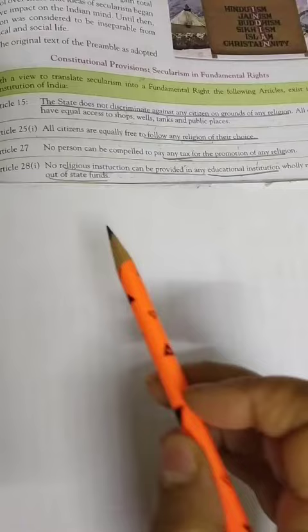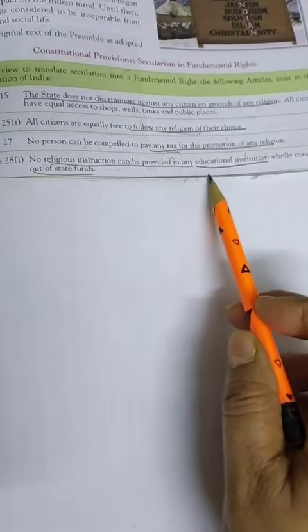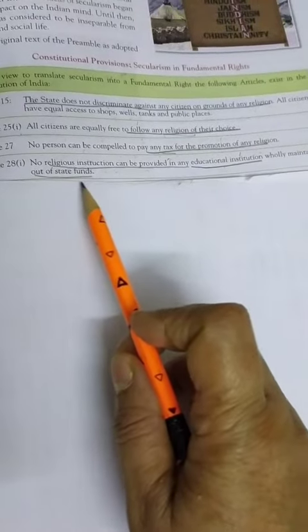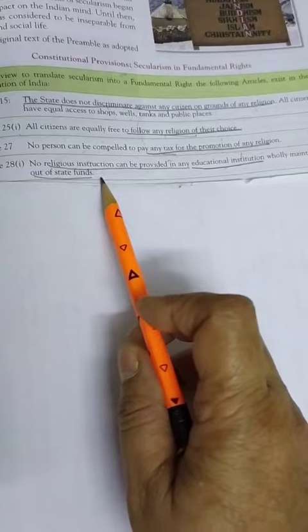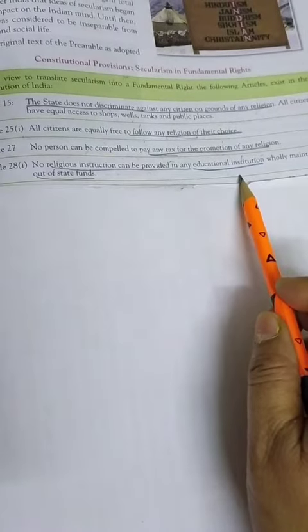Next, Article 28: First, no religious instruction can be provided in any educational institutions wholly maintained out of state funds. किसी भी धर्म को यह instruction नहीं है, कि कोई भी education institution जो है,